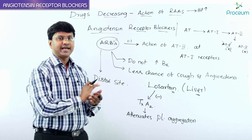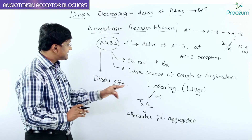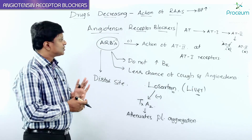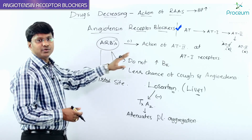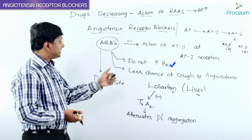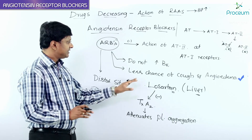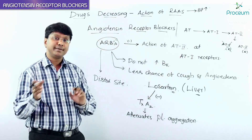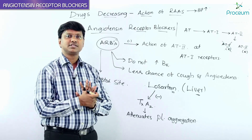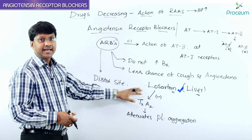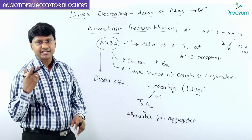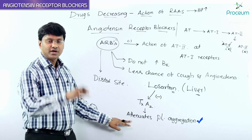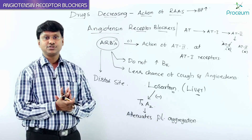All the indications, adverse effects, and contraindications discussed for ACE inhibitors also apply to ARBs, except that the incidence of cough and angioedema is less with ARBs. ARBs mainly antagonize Angiotensin 2 at the Angiotensin 1 receptors and do not increase bradykinin, hence less cough and angioedema. They act distally, inhibiting Angiotensin 2 formed by both ACE and non-ACE pathways. Losartan forms active metabolites in the liver and additionally antagonizes Thromboxane A2, thereby attenuating platelet aggregation.